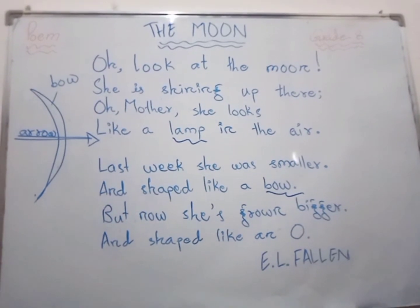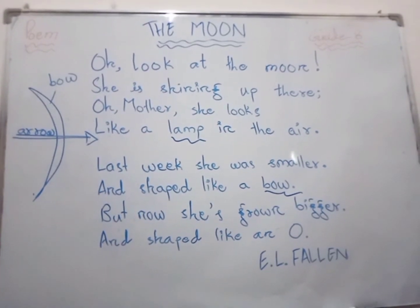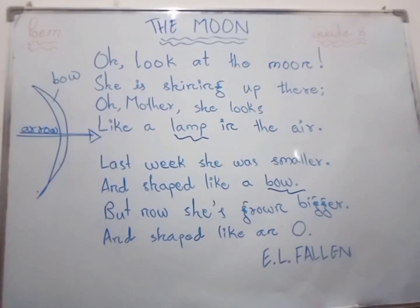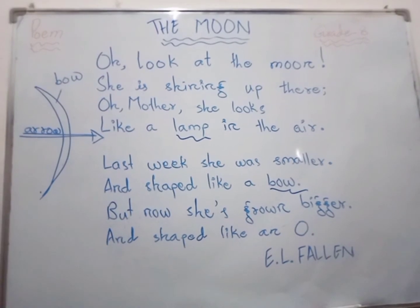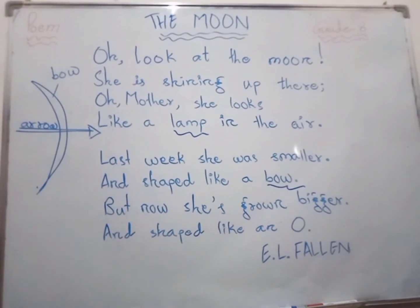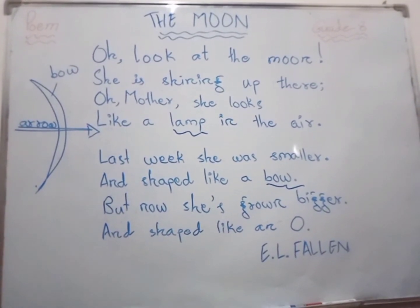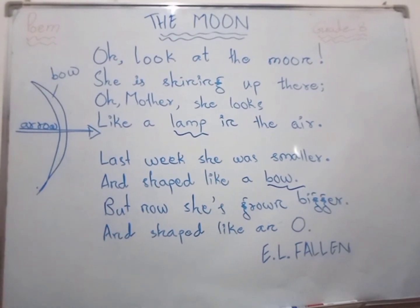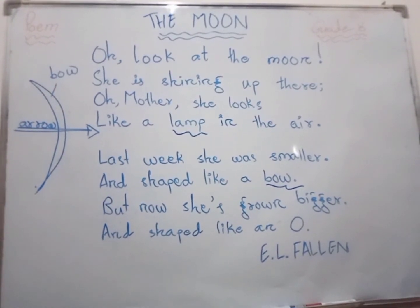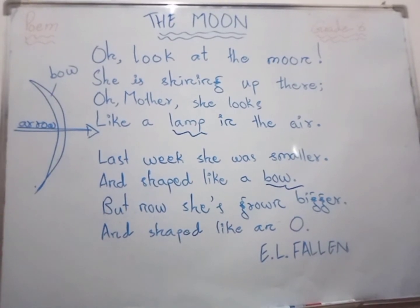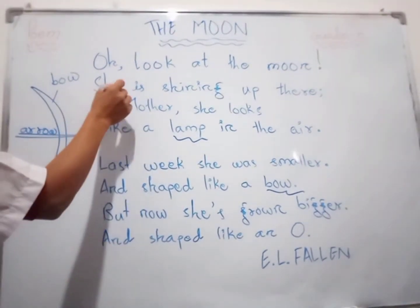She is shining up there. Oh mother, she looks like a lamp in the air. Last week she was smaller and shaped like a bow, but now she has grown bigger and shaped like an O. The poem is about the moon.